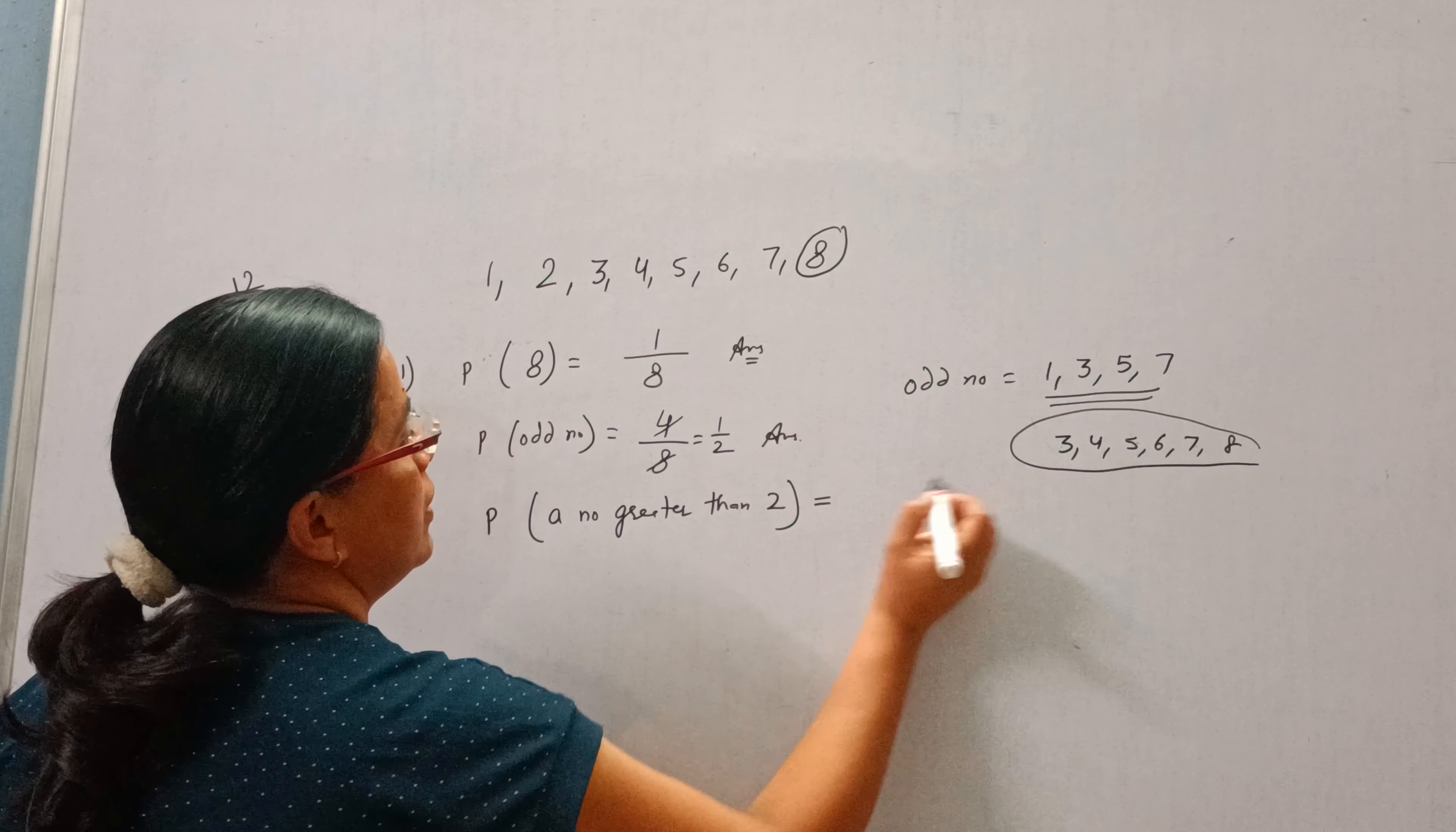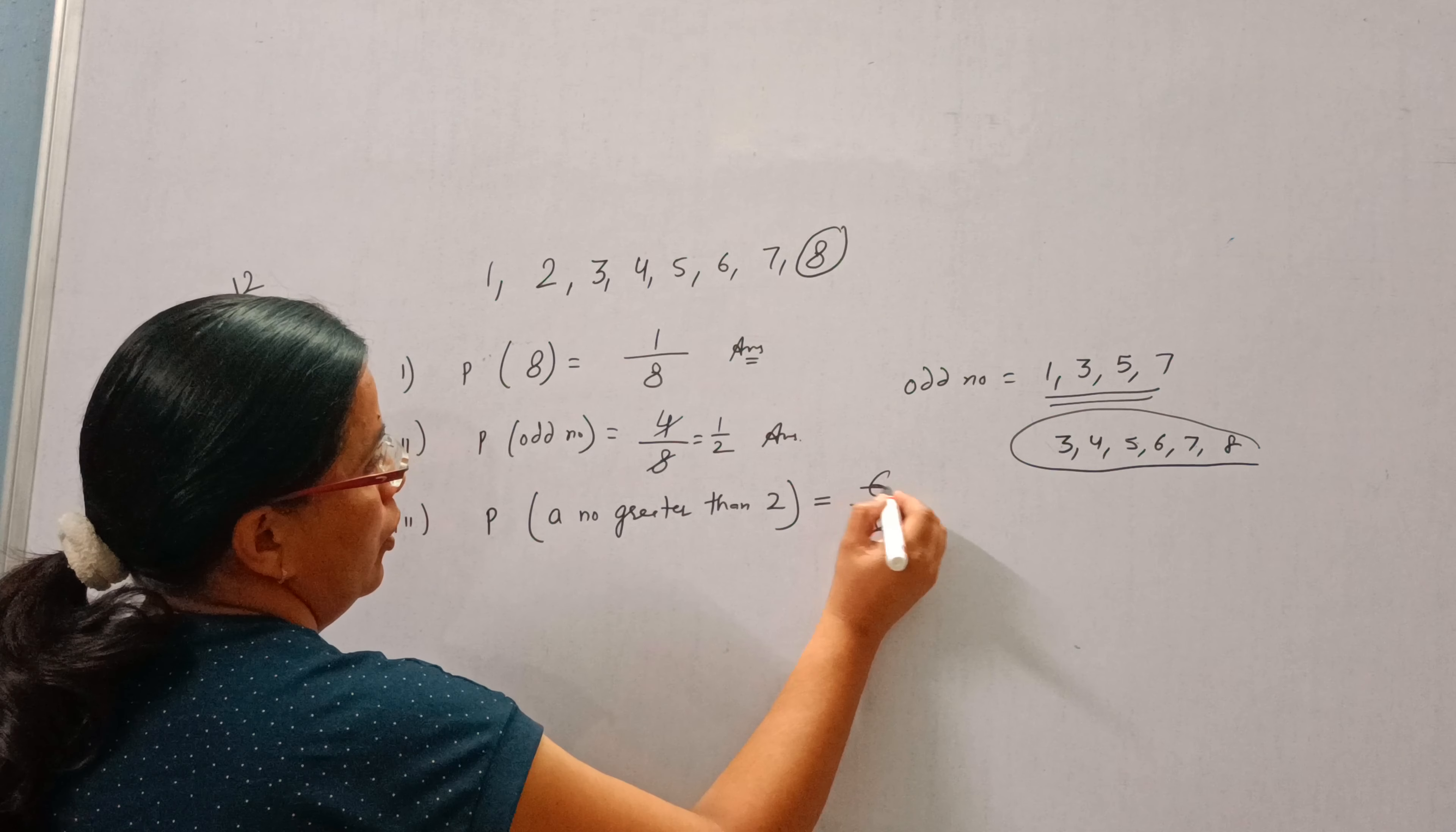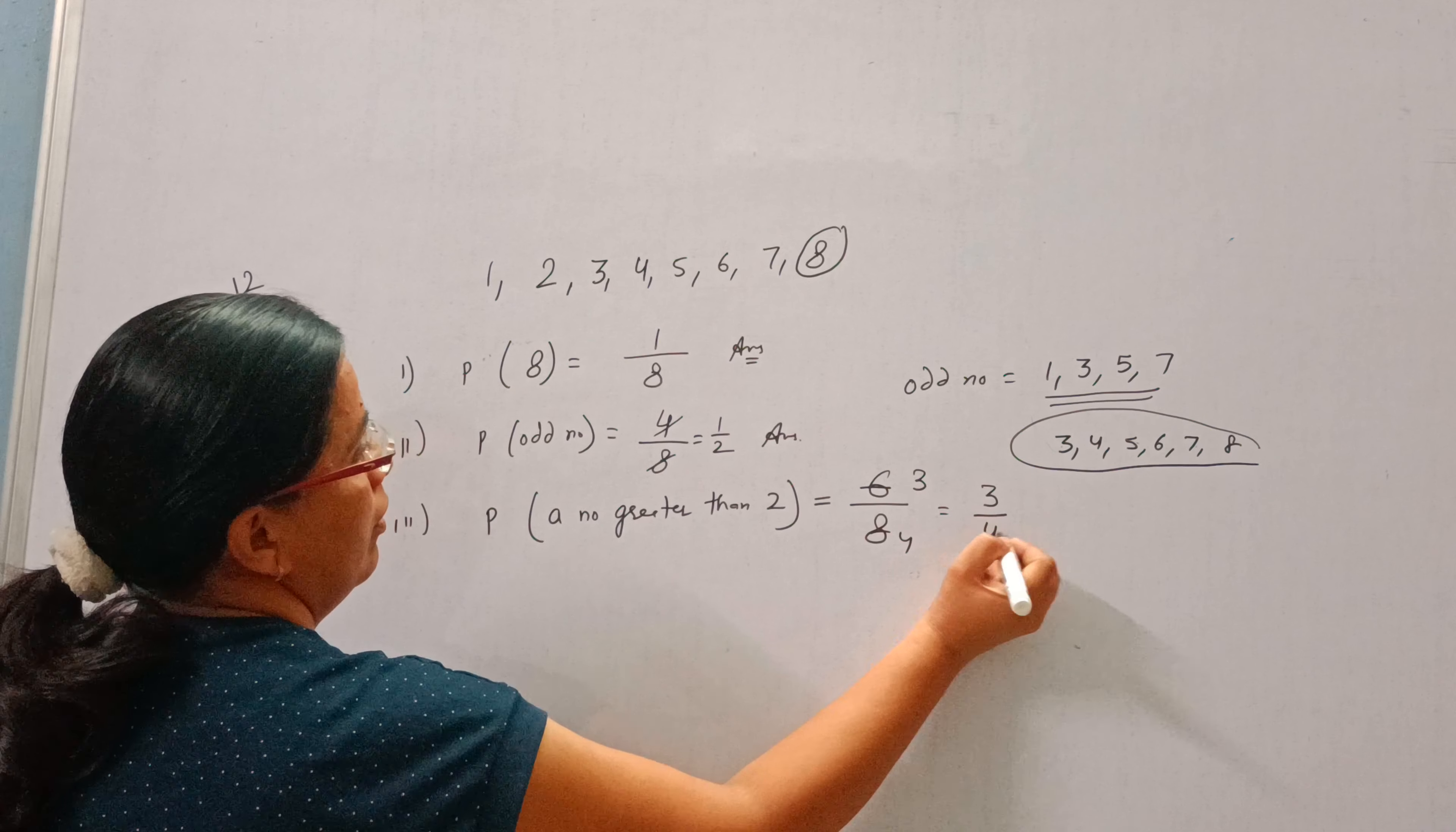1, 2, 3, 4, 5, 6. So probability is 6 by 8. Simplifying, the answer is 3 by 4.